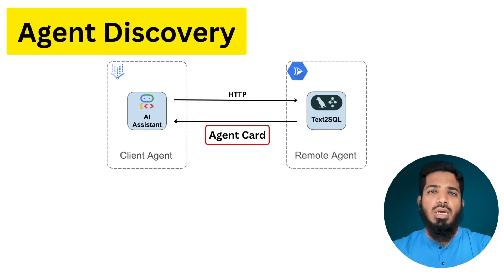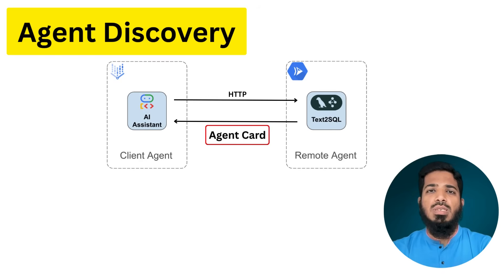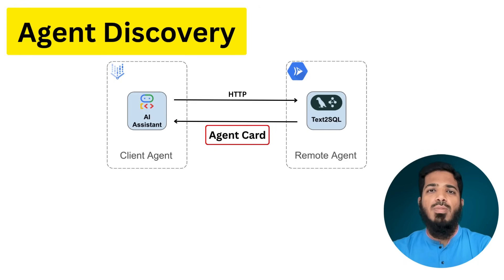After the client agent gets the agent card, the next step is authentication, and the third step is to send the actual message. This request can be sent as a synchronous or asynchronous request. Output can be provided right away or a streaming response can also be generated. So in these three steps, our AI assistant is able to take help from the text-to-SQL agent because of A2A over the network.